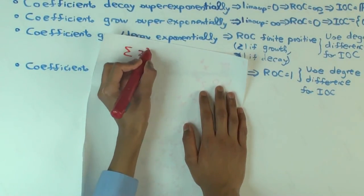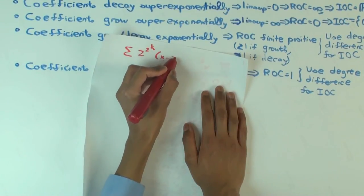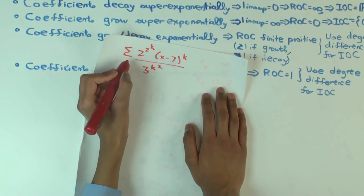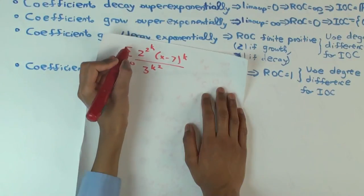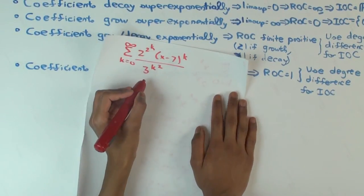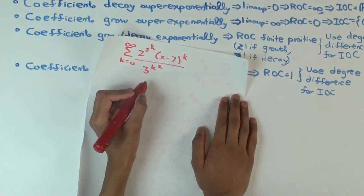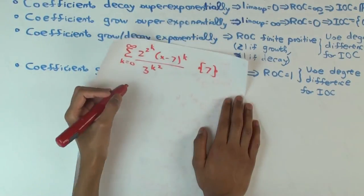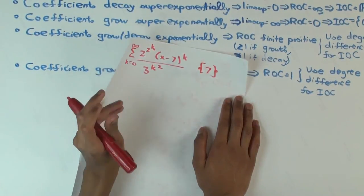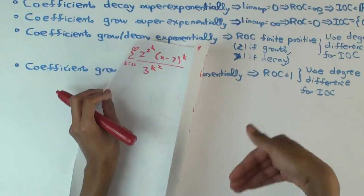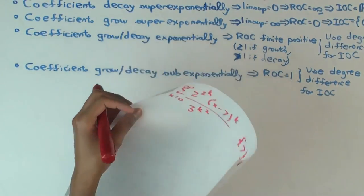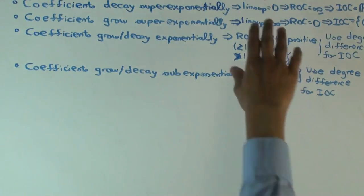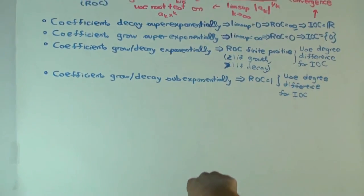One more example: the series has 2 to the k times (x minus 7) to the k, divided by e to the k squared. The coefficient is 2 to the k over e to the k squared. The numerator is exponential and the denominator is superexponential, so the LIMSUP is zero — radius of convergence is zero. Since it's in (x minus 7) to the k, the interval of convergence is just the single point x = 7. In summary, for superexponential cases you identify which part dominates using the hierarchy, and you don't actually need to compute the LIMSUP explicitly.